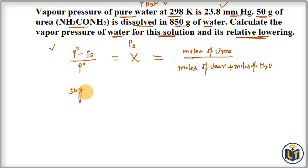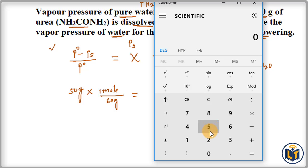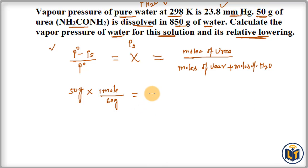To find moles of urea: the mass given is 50 grams, and the molar mass of urea is 60 grams per mole, meaning one mole of urea has a mass of 60 grams. Dividing 50 by 60 gives us 0.833 — these are the moles of urea. You can verify this value using the periodic table.